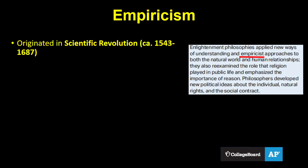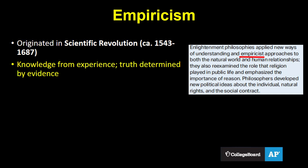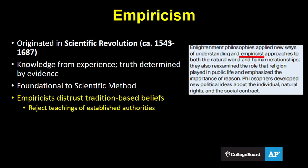We begin with empiricism, which first developed during the Scientific Revolution. This is the concept that knowledge comes from experience, and that truth can only be determined by providing evidence. It's foundational to the scientific method. Empiricists don't trust beliefs that are based on tradition, and these thinkers often rejected the teachings of established authorities, such as organized religion.